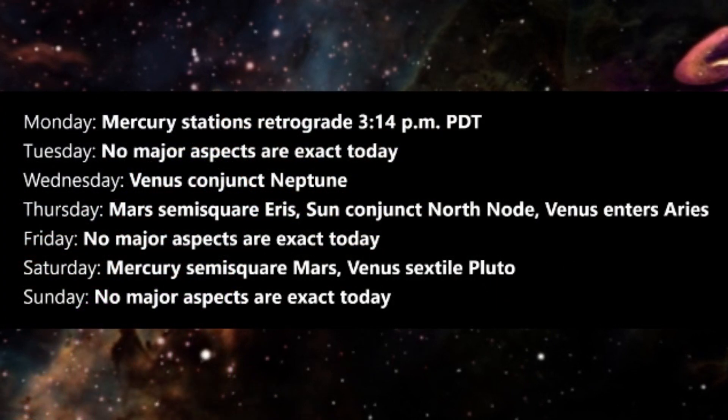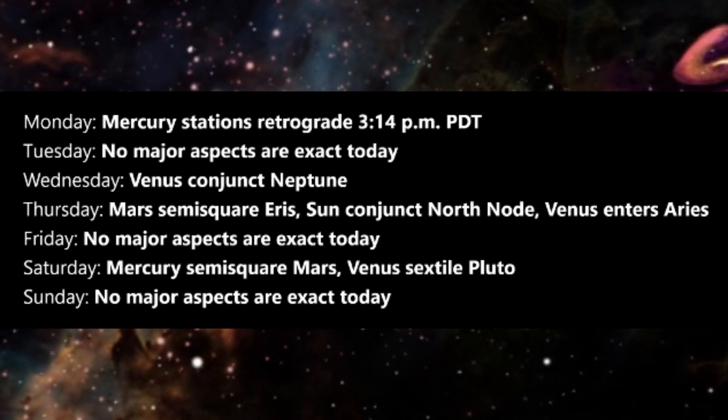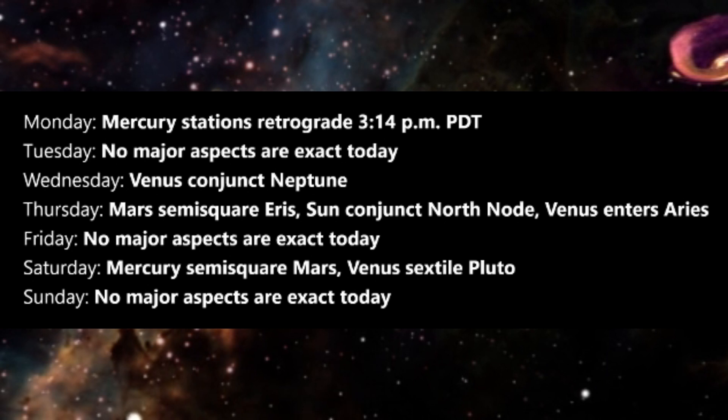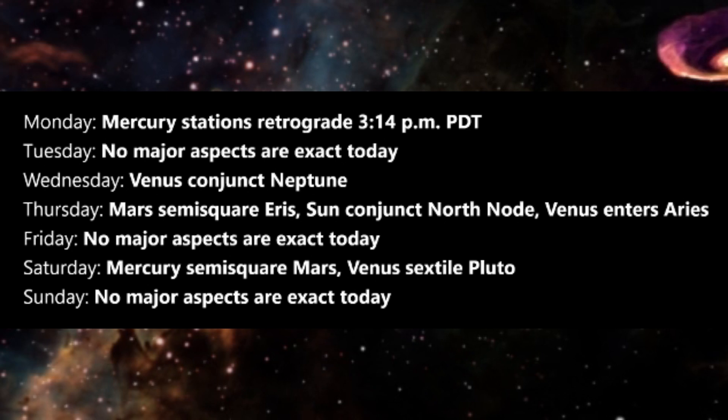Here are my brief interpretations of this week's most important planetary aspects. Monday is the day that Mercury stations retrograde. Mercury comes to a standstill at 3:14 p.m. Pacific Daylight Time and slowly begins to move backward through Aries. This retrograde period will last until April 25th.